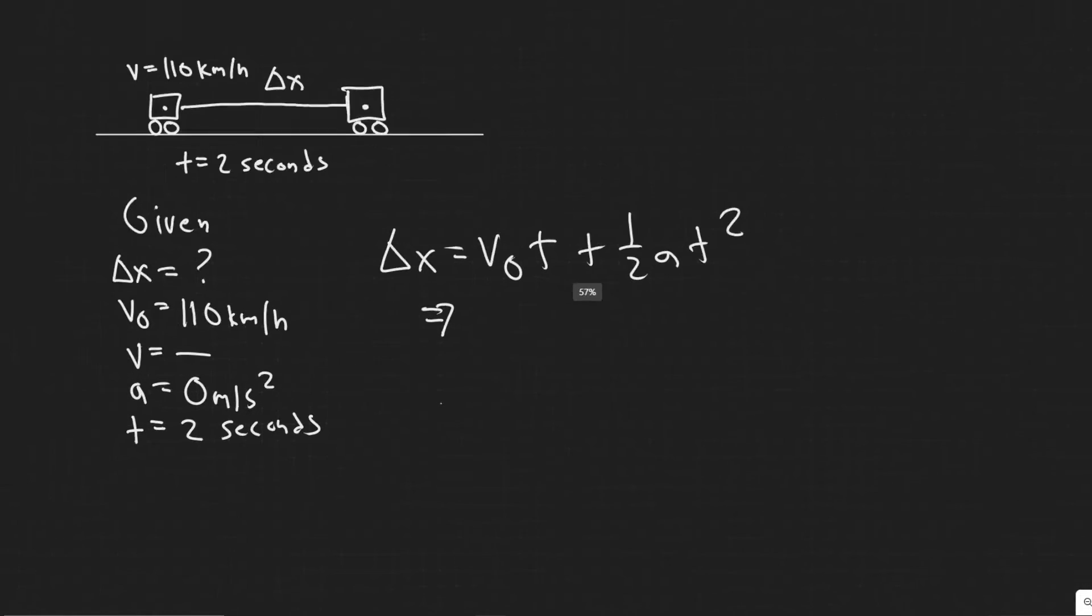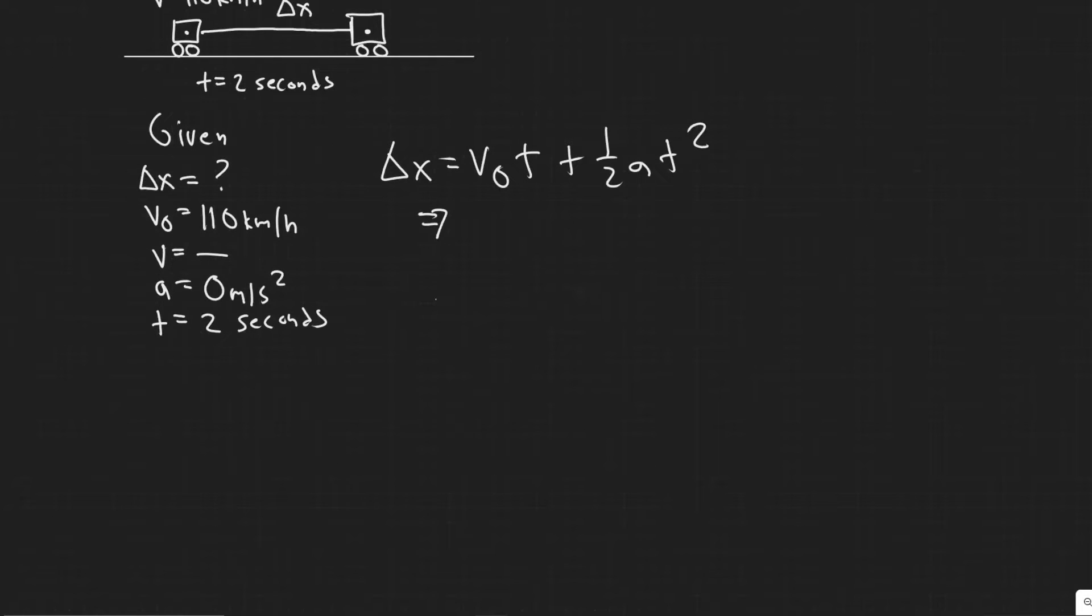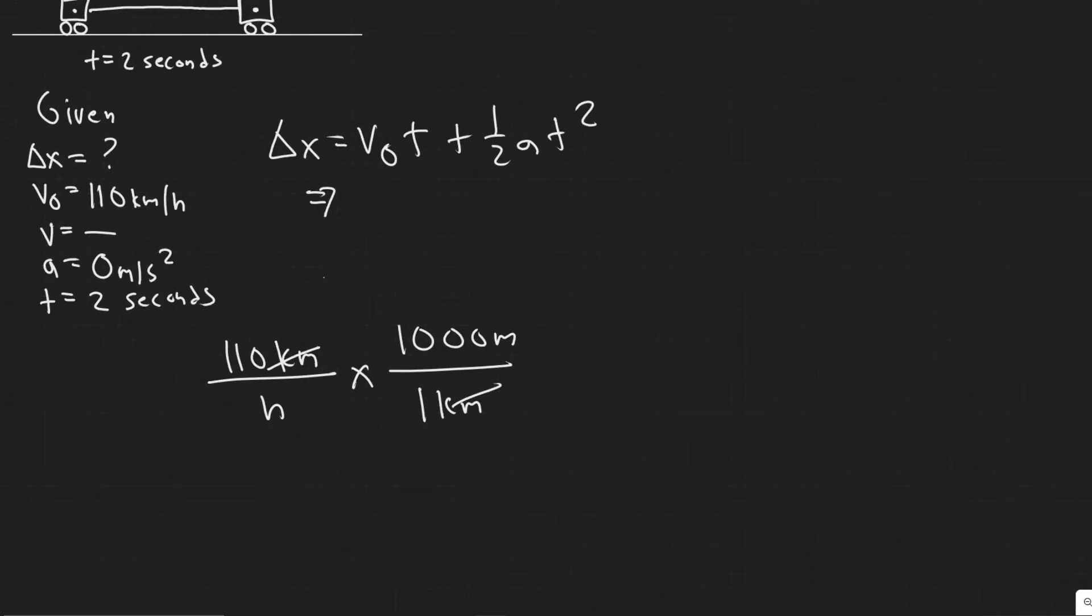So what we're going to have to do is convert that into the correct unit. So you have 110 kilometers per hour, but we're converting it into meters per second. So you should know that one kilometer is equal to 1000 meters. That's what the k means. It just means 1000. So 1000 meters.